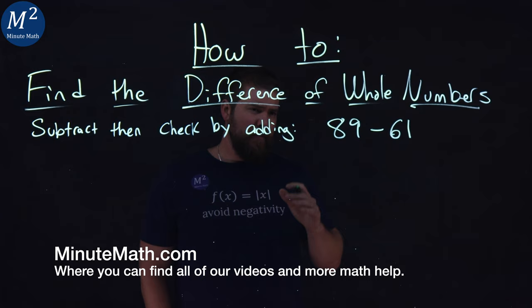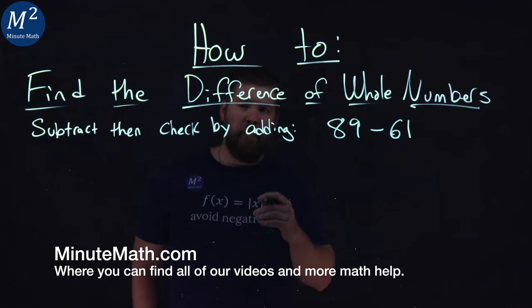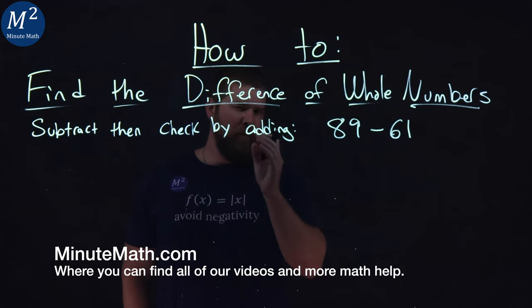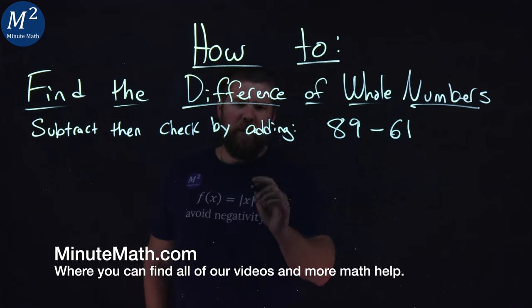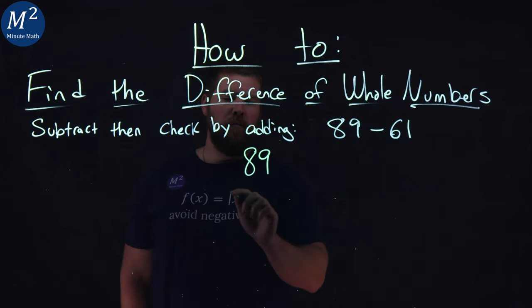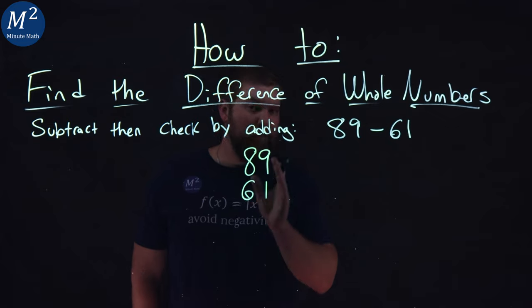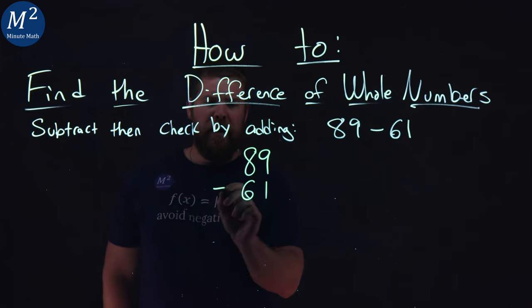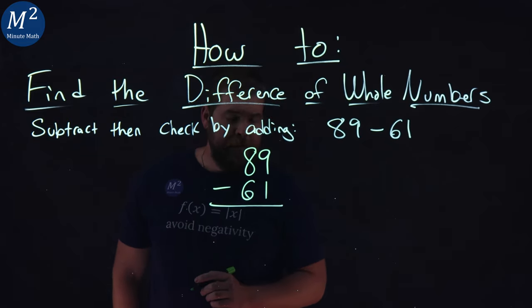Now, we're given two numbers here, 89 and 61, and we want to find the difference and we want to check our answer. So I'm going to take my 89 and put 61 right underneath it, making sure our place values line up, and then let's subtract it.